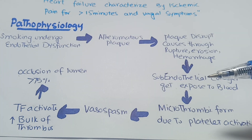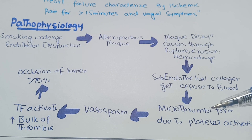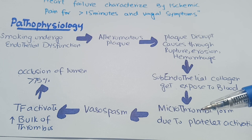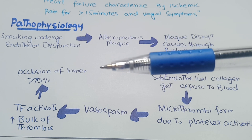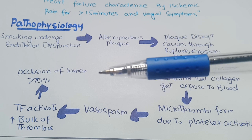When these life-threatening changes take place, it results in exposure of subendothelial collagen. This subendothelial collagen has von Willebrand factor, and when this von Willebrand factor gets exposed, it activates platelets, and platelets result in microthrombi. All these events ultimately lead to vasospasm, and these atheromatous changes and vasospasm cause occlusion of more than 75% of the cross-sectional area of the lumen, resulting in ischemia.